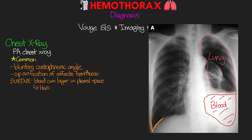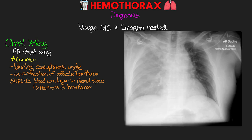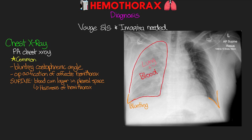When blood layers in supine patients, it can lead to a haziness of one half of the chest compared to the other. In this example you can see blunting at the costophrenic angle — not the sharp edge like on the other side — and the lung itself looks a little more gray and opacified, but without the large collection we saw in the previous example. One important thing to know is that with the chest x-ray, we're not going to be able to distinguish between a hemothorax and some other pleural effusion. The patient's history plays into that — if they're a trauma patient, we can pretty much assume it's a hemothorax.